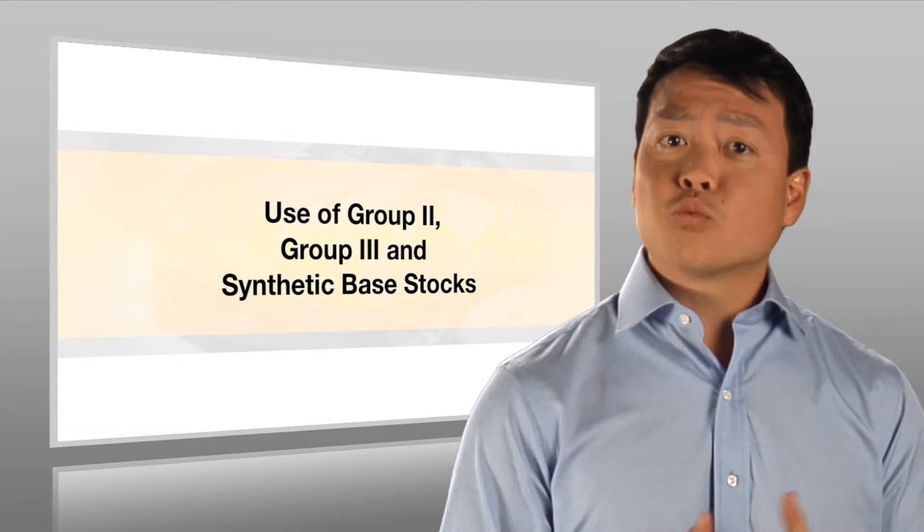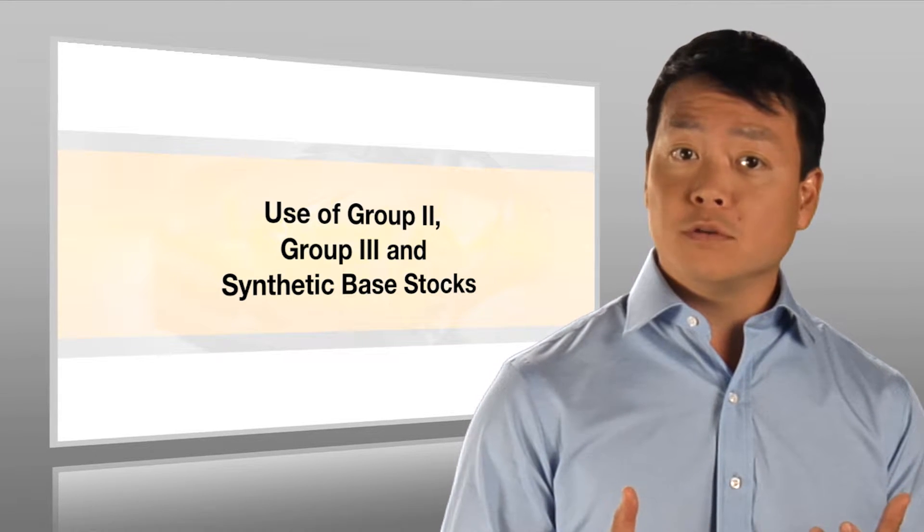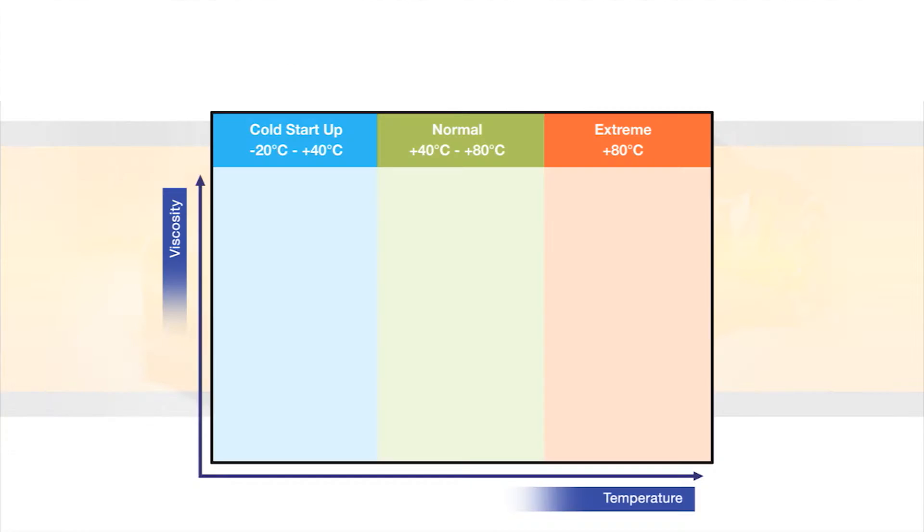Viscosity modifiers raise the viscosity to the required level while allowing the oil to flow at cold temperatures. You can see how a mono-grade oil's viscosity changes as the temperature changes. At low temperatures, the viscosity is higher. As the temperature increases, the viscosity drops dramatically.